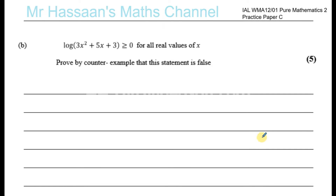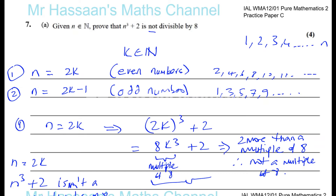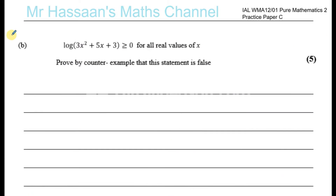Question number 7, part B, from Pure Mathematics 2, Practice Paper C. Here we have a question which is about proofs again — proof by counter example.